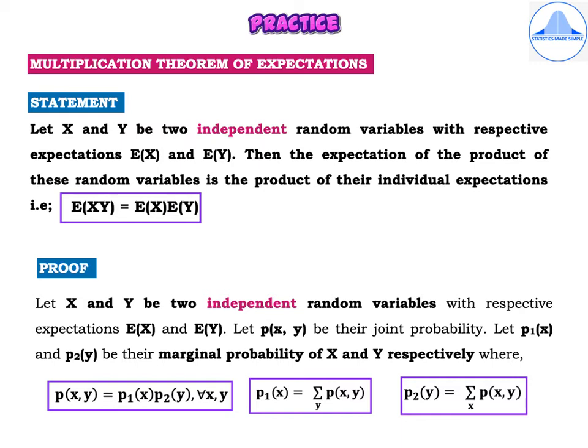Start with the proof. Let x and y be two independent random variables with respective expectations E(x) and E(y). Let p(x, y) be their joint probability, and let p1(x) and p2(y) be their marginal probabilities respectively. Because the random variables are independent, p(x, y) = p1(x)·p2(y) for all x, y. Also, p1(x) = summation over y of p(x, y) and p2(y) = summation over x of p(x, y).